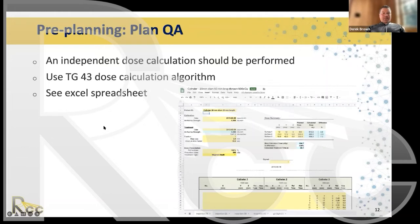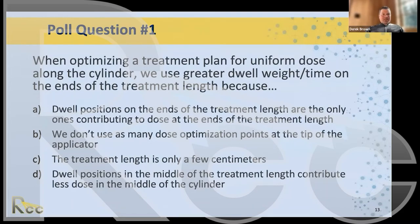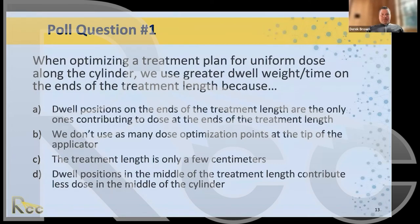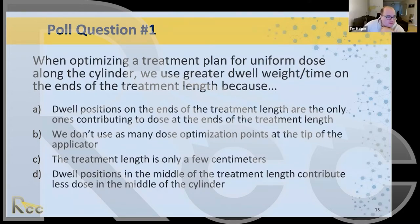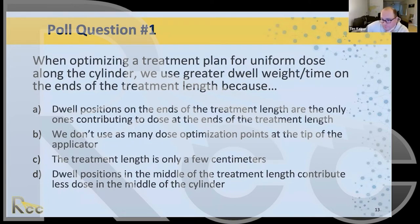Poll question: When optimizing a treatment plan for uniform dose along the cylinder, why do we use greater dwell weight or time on the ends of the treatment length? Options: (A) Dwell positions on the ends are the only ones contributing dose at the ends; (B) We don't use as many dose points at the tip; (C) The treatment length is only a few centimeters; or (D) Dwell positions in the middle contribute less to the middle of the cylinder.